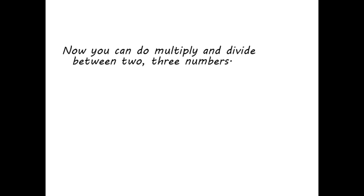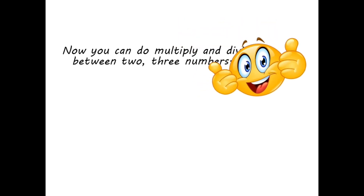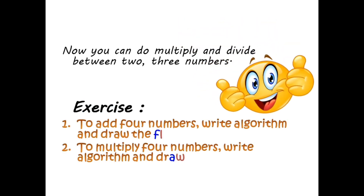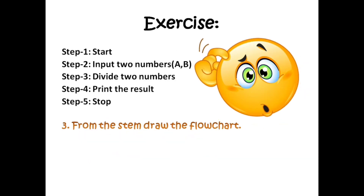Now you can do multiplication and division between two or three numbers. Here are some exercises: Number 1 — to add four numbers, write the algorithm and draw the flowchart. Number 2 — to multiply four numbers, write the algorithm and draw the flowchart. Number 3 — from the given stem, draw the flowchart.